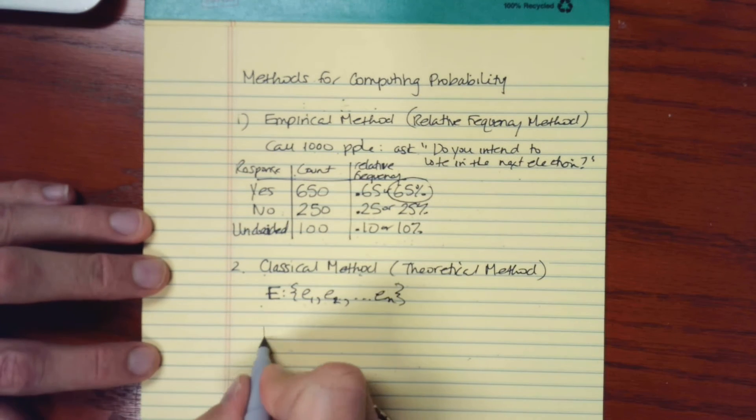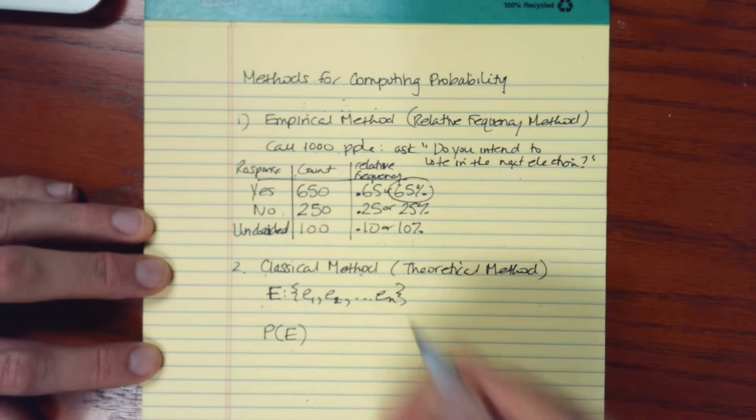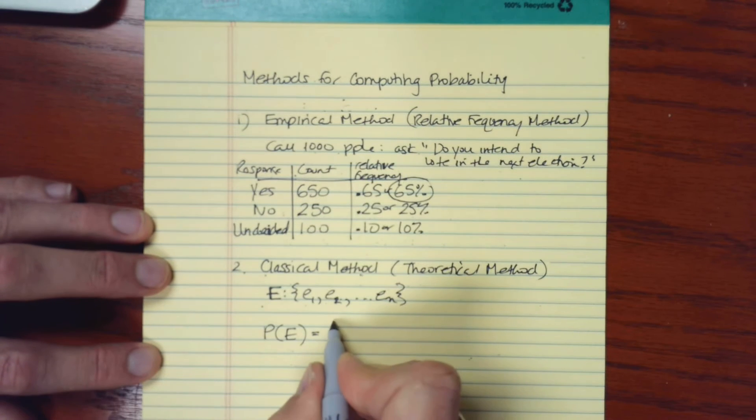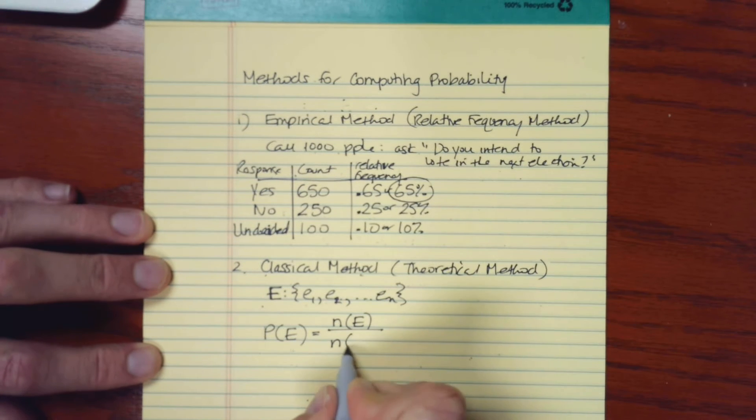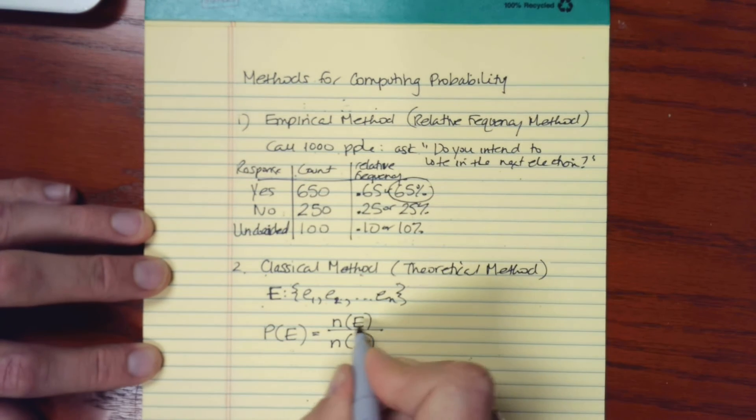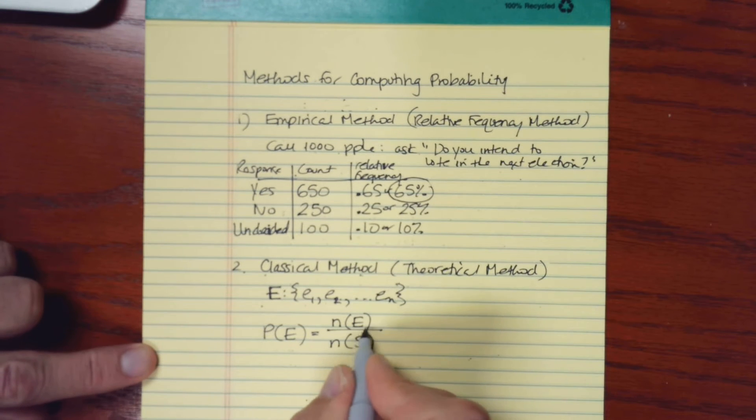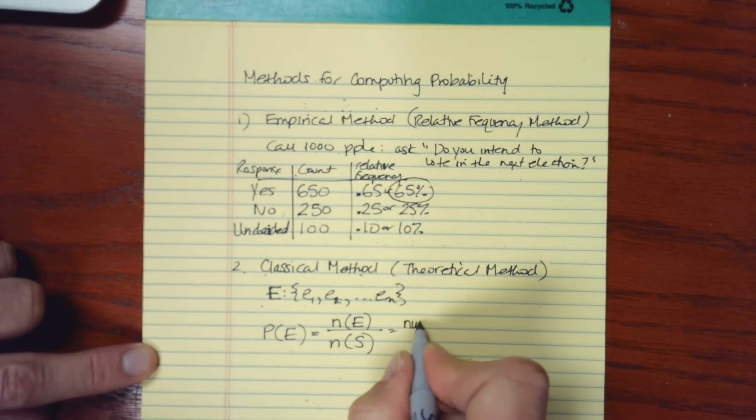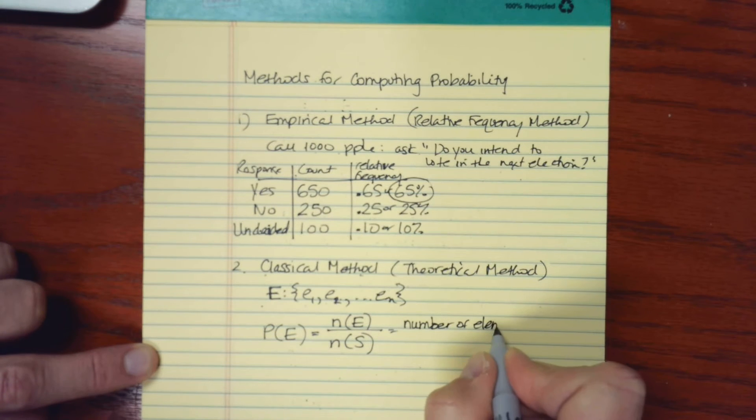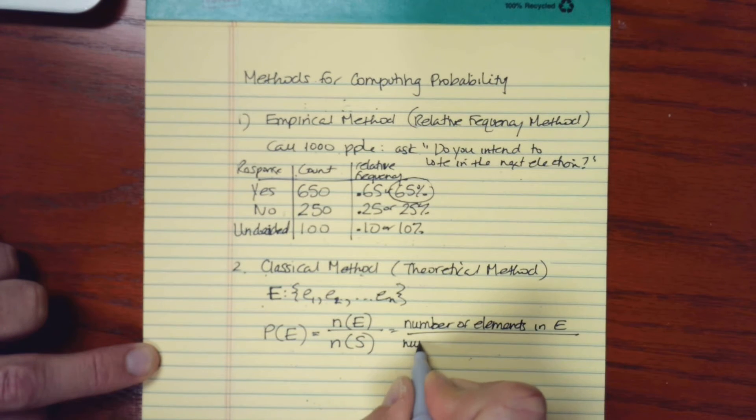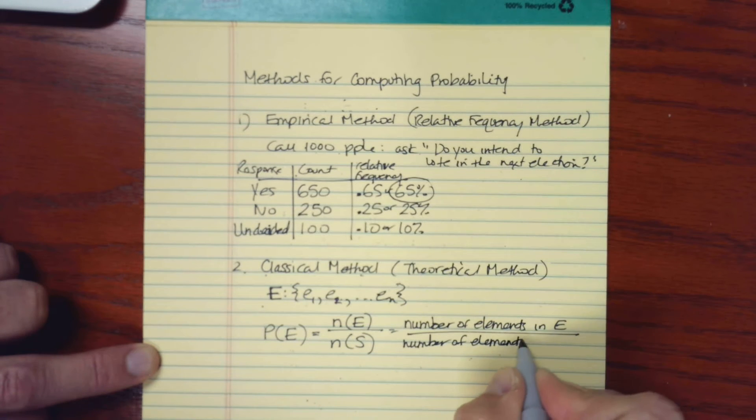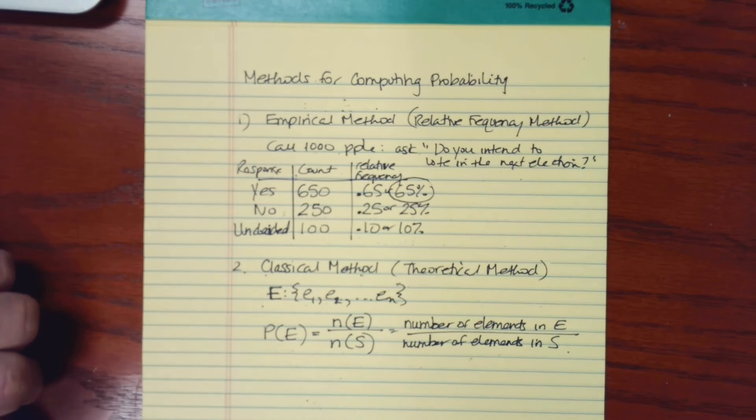The way that we can calculate the probability for an event using the classical method is that we take the number of elements that are in that event relative to the number of elements in the entire sample space. This lowercase n with the parentheses, that's the number of elements in E, divided by the number of elements in S.